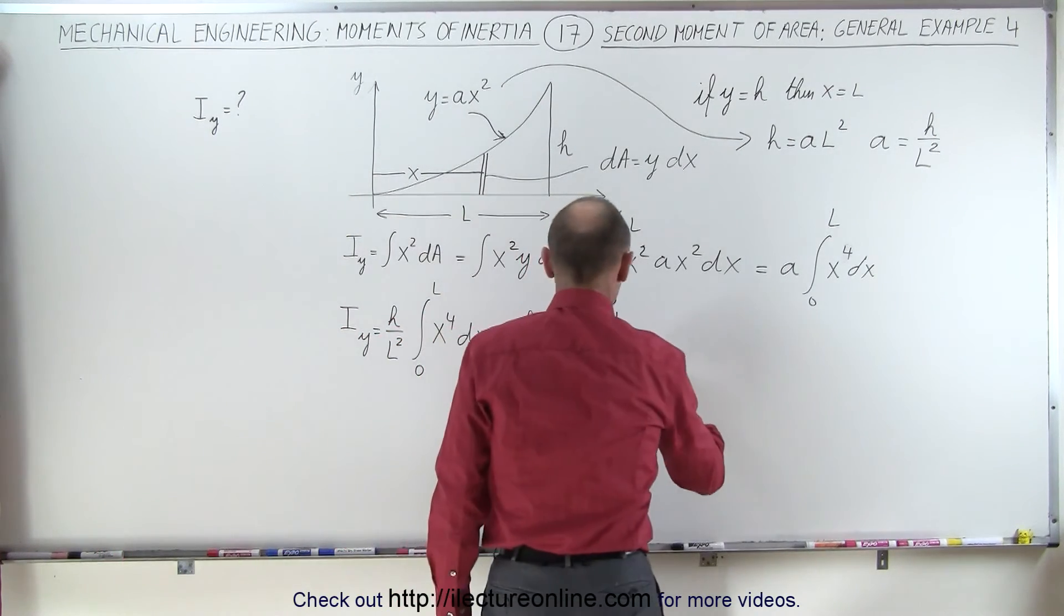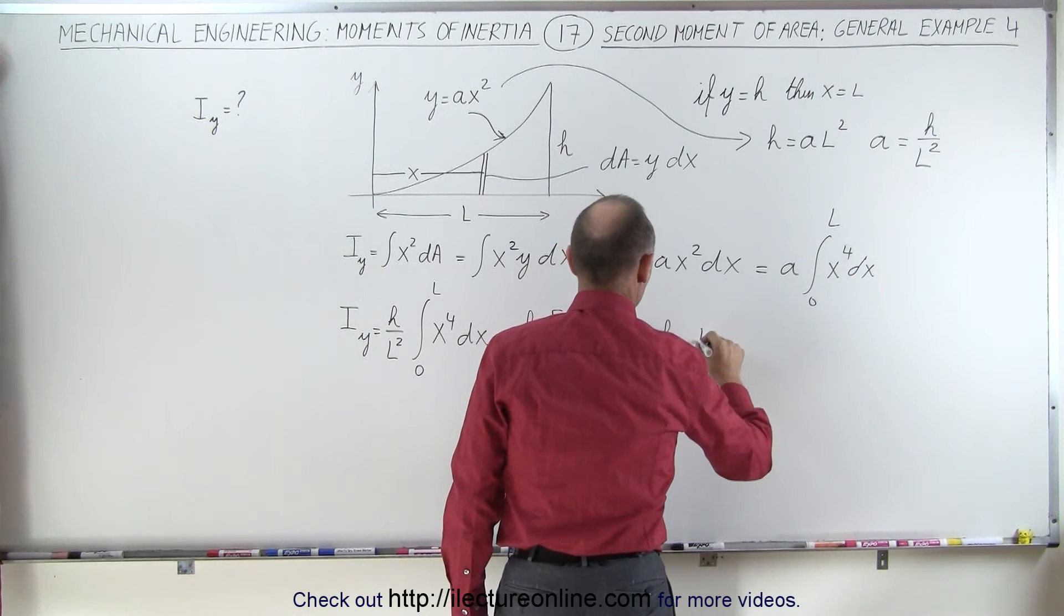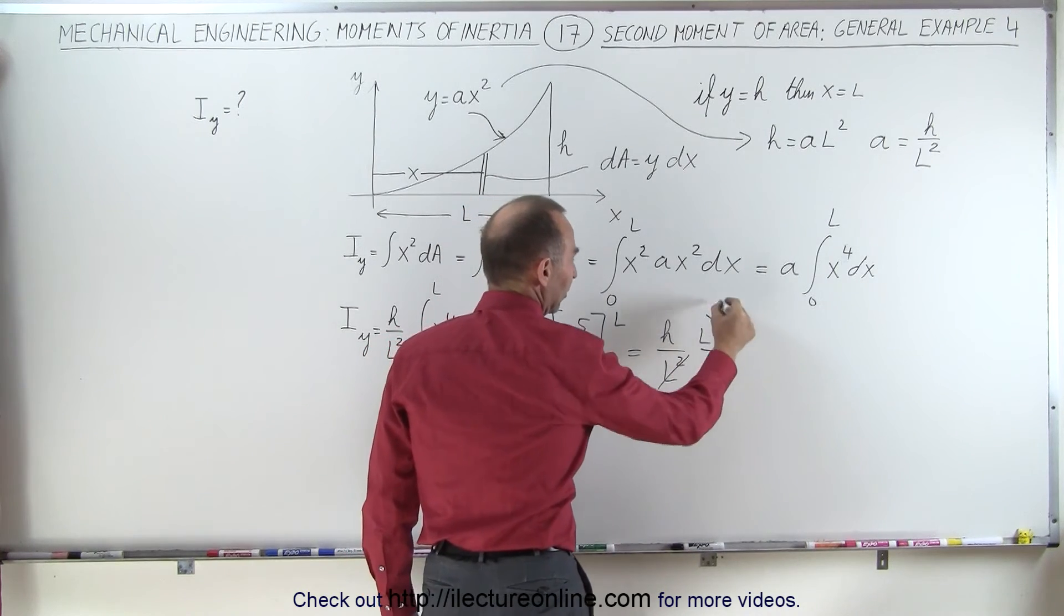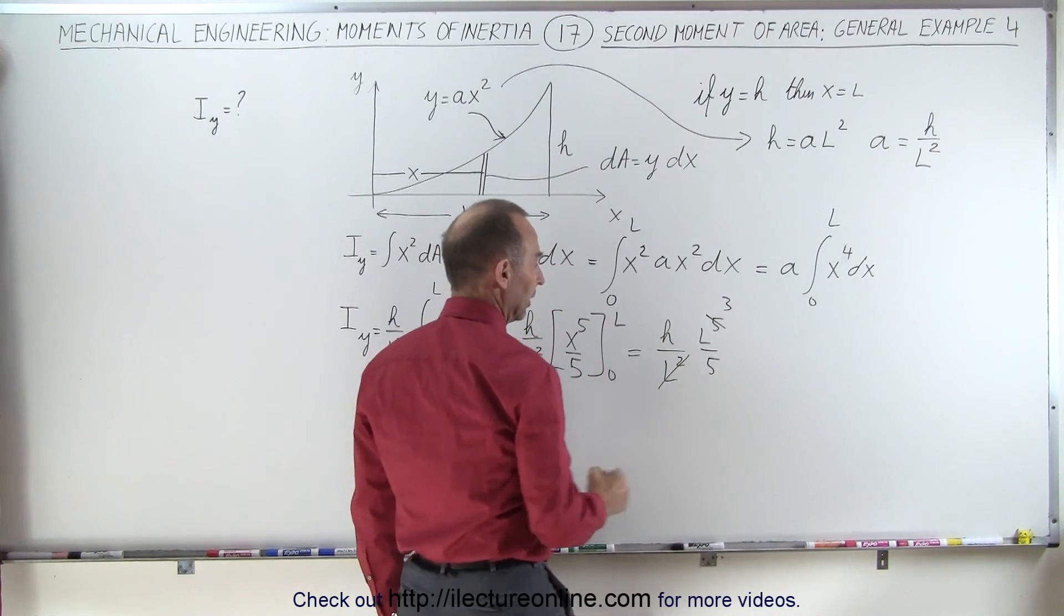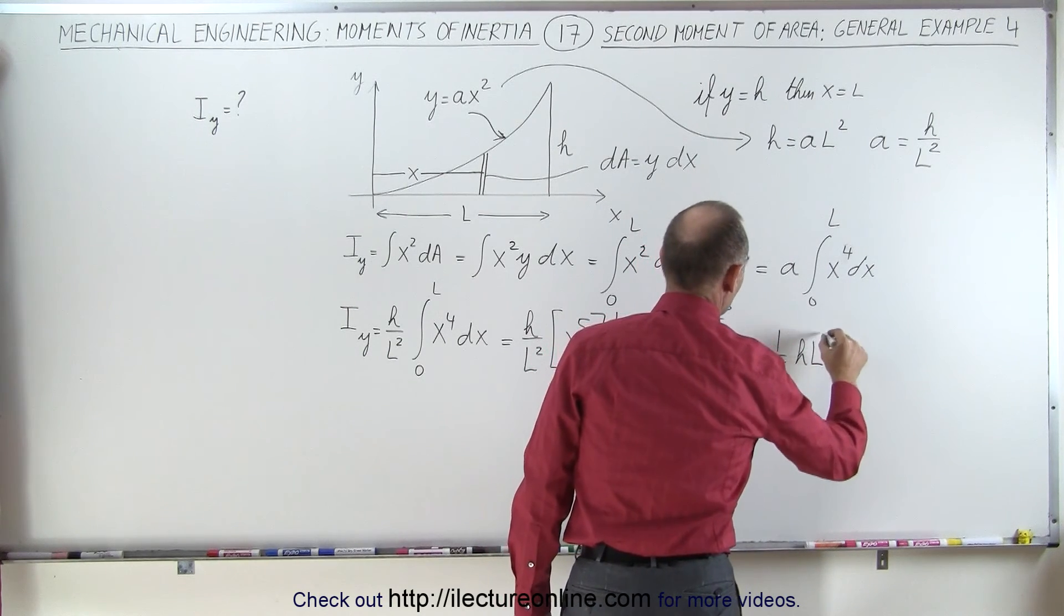Plug in the upper limit we get H over L squared times L to the fifth over 5. And notice that L squared cancels with L to the fifth. That becomes L to the third. And this gives us 1 fifth HL cubed.